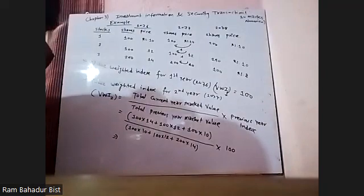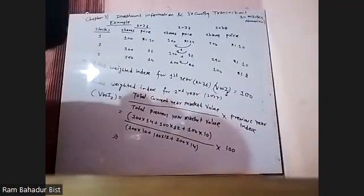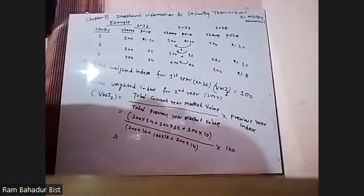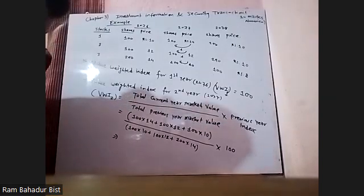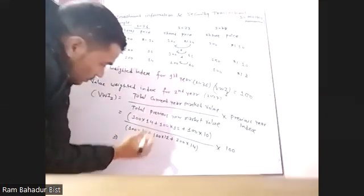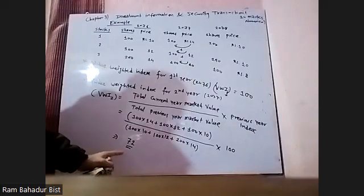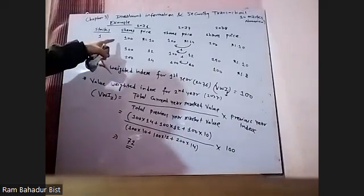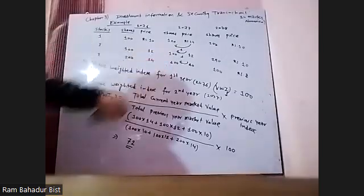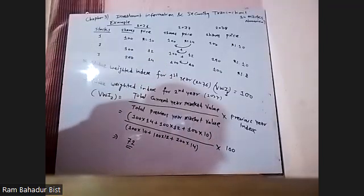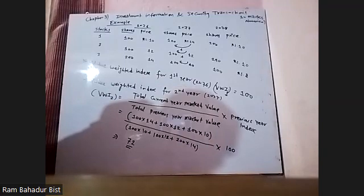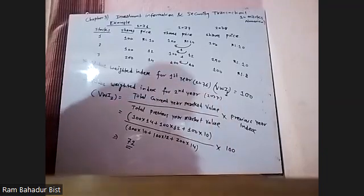How did you get out of this money? The index values are: 72, 72, 72, 73, 73, 76, 77, 79, 70, 82, 80.